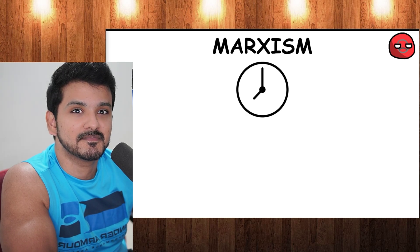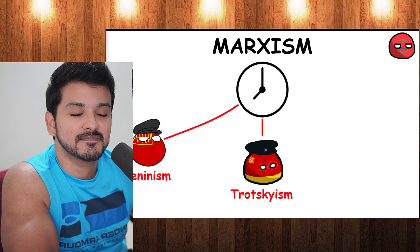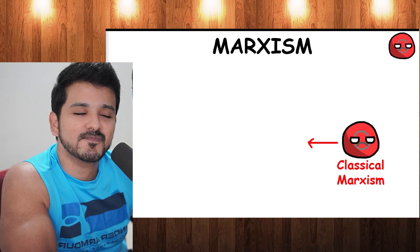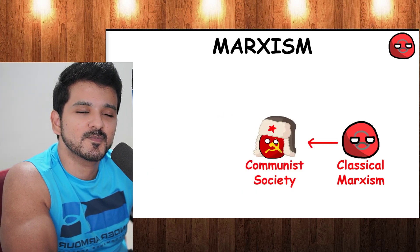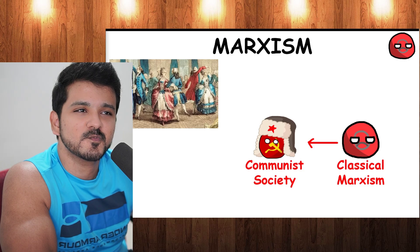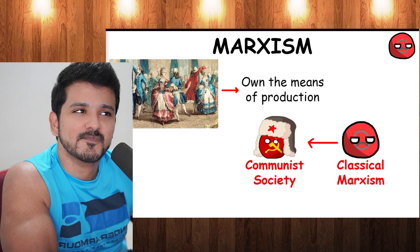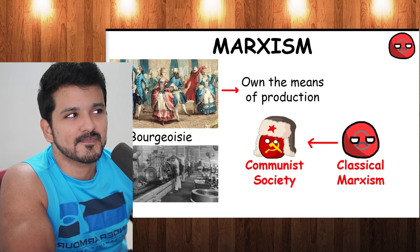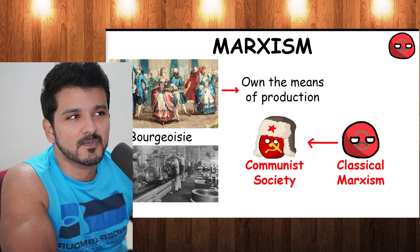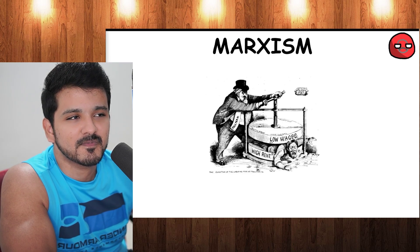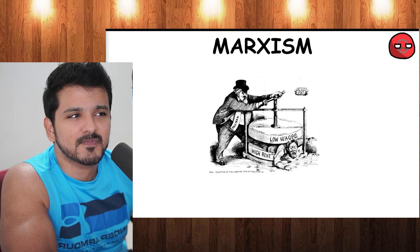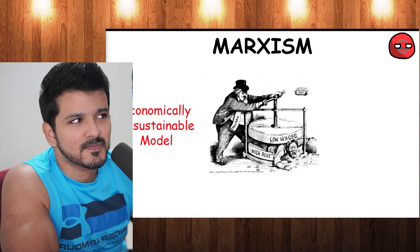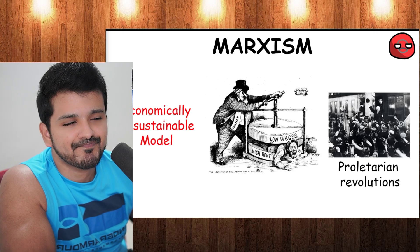One of the Third Way's key goals is to create a social investment state that helps people climb the social ladder through workforce development and education rather than handouts. Marxism has developed over time into various branches and schools of thought, so no single definitive Marxist theory exists. Classical Marxism seeks to create a communist society, making a distinction between the bourgeoisie — the minority who owns the means of production — and the proletariat, the vast majority who produce goods and services. It says capitalism exploits and oppresses the proletariat, making it an economically unsustainable model as it causes proletarian revolutions.